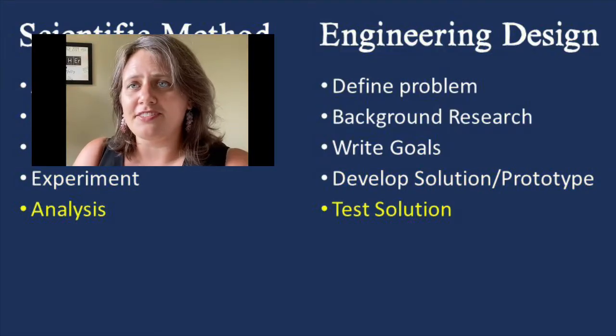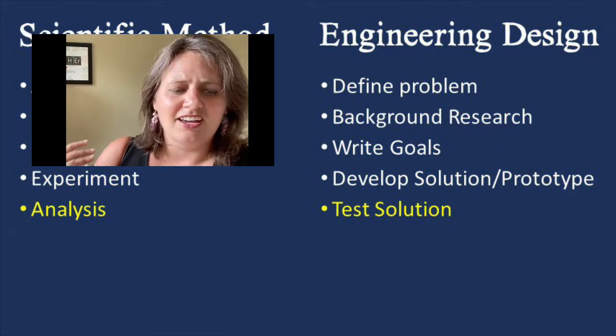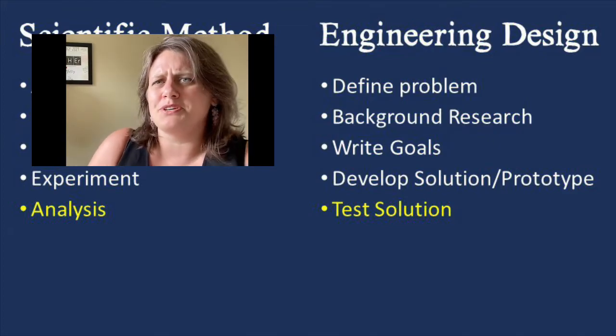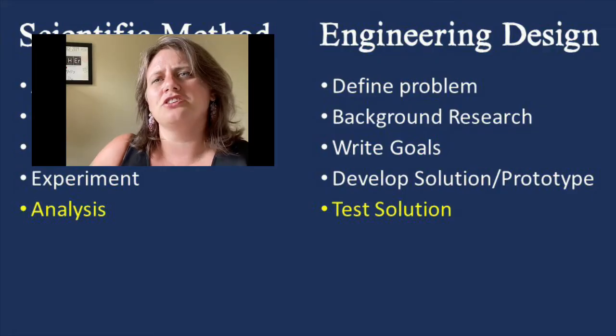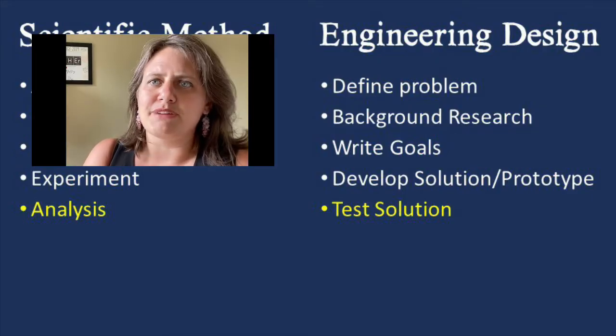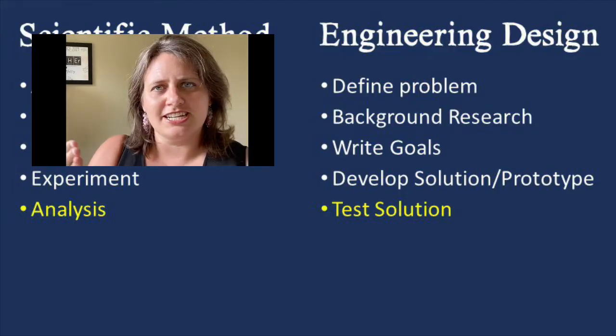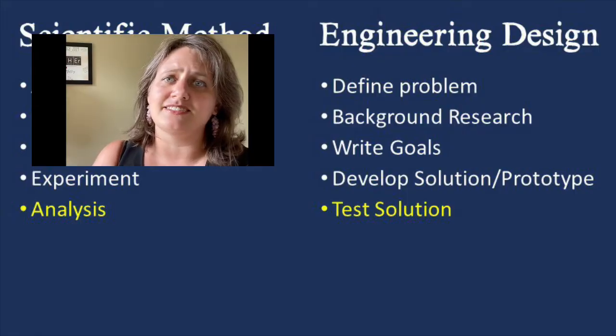The fifth step for the scientific method is analysis and its counterpart in engineering design is going to be testing your solution. So once you've built your prototype in engineering design, you're going to evaluate it based on the goals that you set forward and you're going to measure its performance. If you're doing a scientific method project, you're going to take the data that you collected during your experiment, you're going to analyze it.